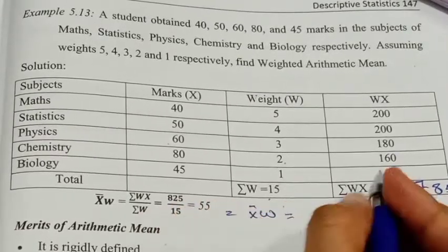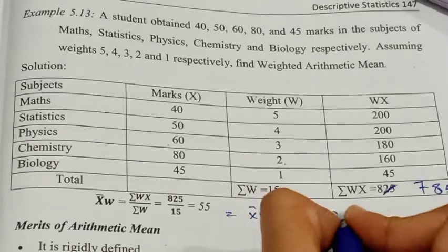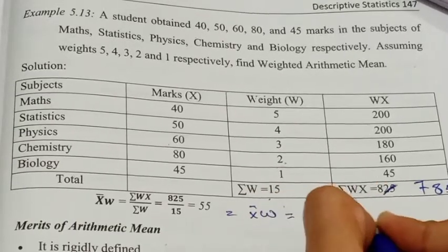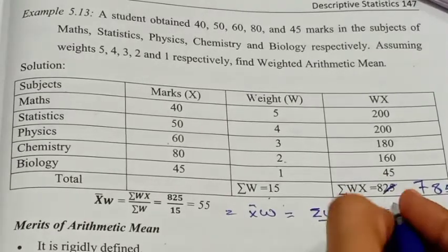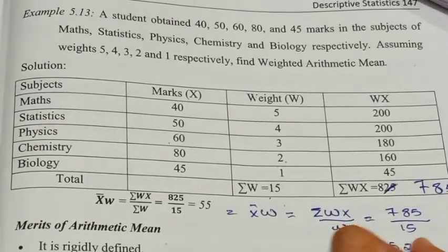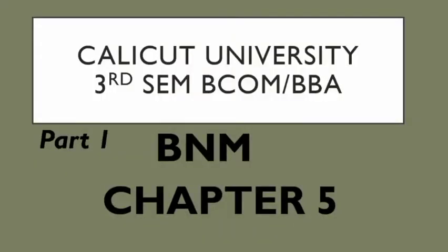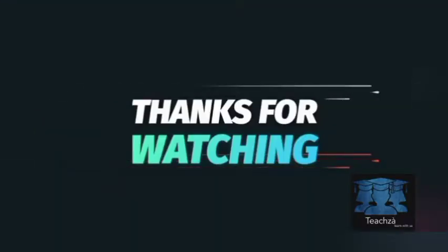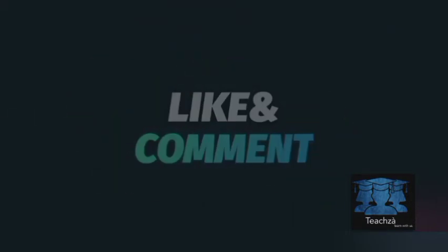The Weighted Arithmetic Mean equals sigma wx divided by sigma w: 785 divided by 15 equals 52.3. In the next class, we will learn the geometric mean, harmonic mean, median, and mode. Please like this video, share, and subscribe. Thank you.